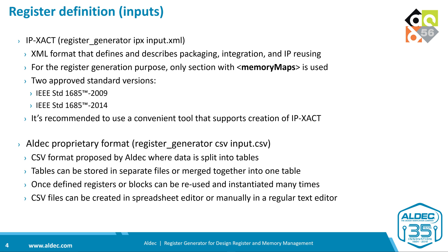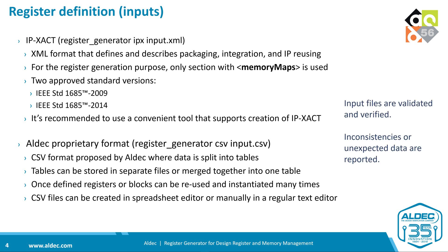Our register generator supports two kinds of input files. The first one is the IP-XACT file, an XML format that defines and describes packaging, integration, IP reuse, and many other things. For generation purposes, we analyze only the section with memory maps. There were two approved standard versions, in 2009 and 2014, and our tool supports both, with the standard version chosen automatically. The second kind of input file is ALDEK's own format based on comma-separated files where data is split into tables. Tables can be stored in separate files or merged into one. Register blocks can be further reused and instantiated many times. Both kinds of files are validated and verified during the generation process.